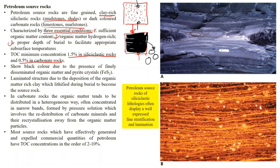Source rocks normally show brown to black color due to the presence of finely disseminated organic matter. If organic matter gets preserved in the sediments, the color becomes black. There are also pyrite crystals — iron sulfide — which also give the black color. Why do carbonate rocks have a lesser amount of TOC than siliciclastic rocks? It has to do with the quality and composition of the organic matter present. In carbonate source rocks, the organic matter tends to be richer in hydrogen, and therefore the TOC content of carbonate rock is significantly lower than the siliciclastic rock.